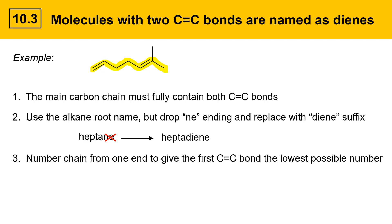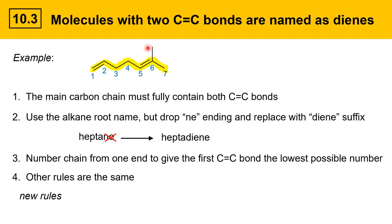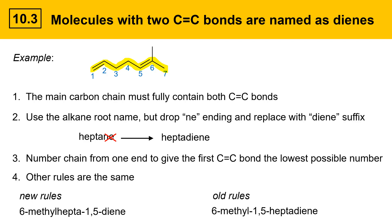The next step is to number the chain from one end to give the lowest possible number to the first C=C double bond along the chain. The first priority is to give the lowest possible number to the first double bond, which means numbering from the left side in this case, giving us one for the first double bond and five for the second. Under the new rules this molecule is named 6-methyl-hepta-1,5-diene, where the locators for the double bonds come before the suffix. Under the old rules it would be 6-methyl-1,5-heptadiene, where the locators are moved in front of the hepta instead of just before the diene part. The two names are very similar.